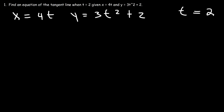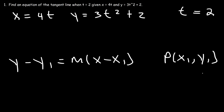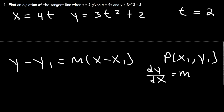Let's think about the elements of what we need in order to find the tangent line. I like to use the point-slope formula. What we need is some point with our x and y coordinate — that's x1 and y1 — and the other thing we need is the slope. Basically we need to evaluate the derivative at t equals 2.